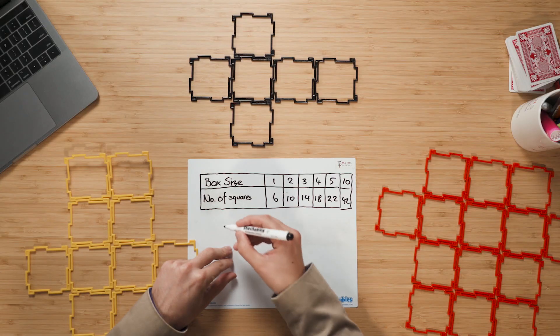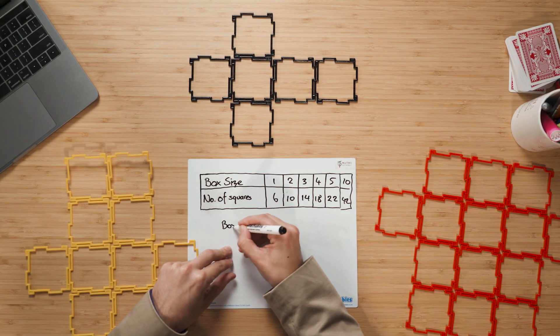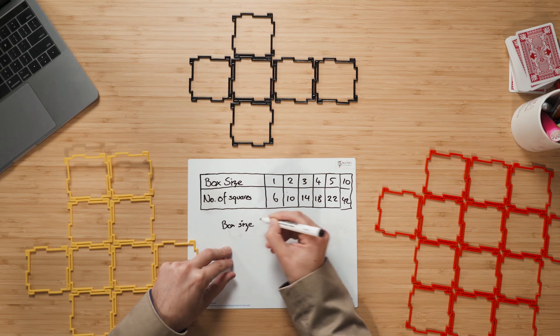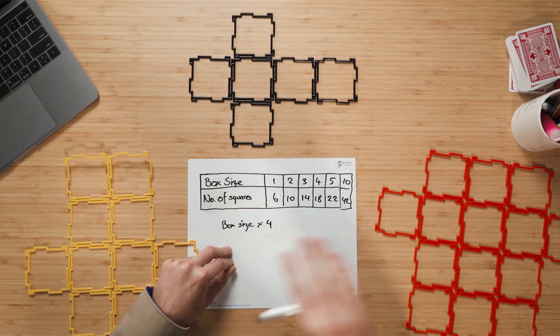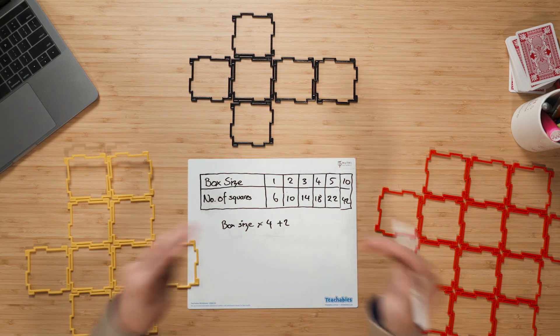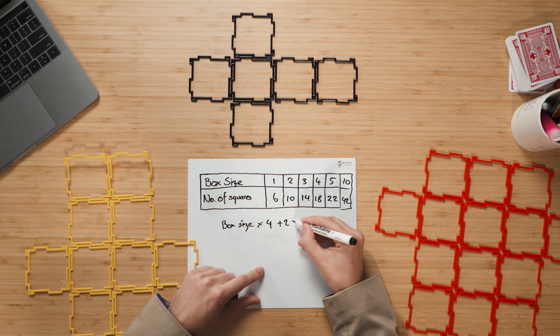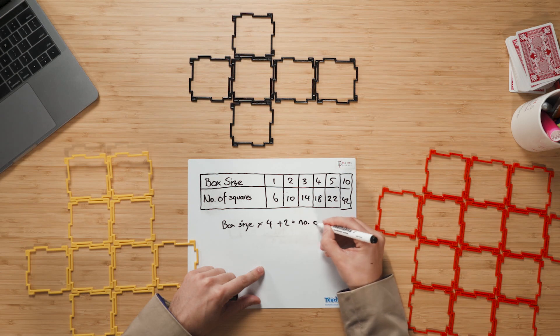And what you'll quite often find is when they explain it to you in words, they'll say, well, it's the box size times four because it doesn't matter how big the box is going to be, there's going to be four rows of it. And then you're going to add two on the ends. And that's going to tell us the number of squares.